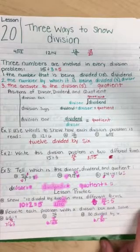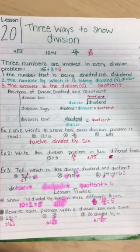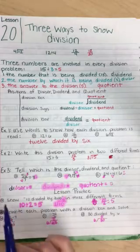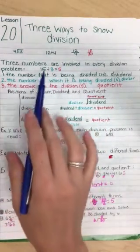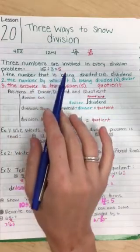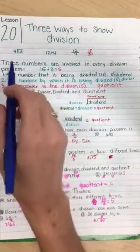Lesson 20 is called Three Ways to Show Division. So here we have the problem 12 divided by 4. So here's three ways to show 12 divided by 4.